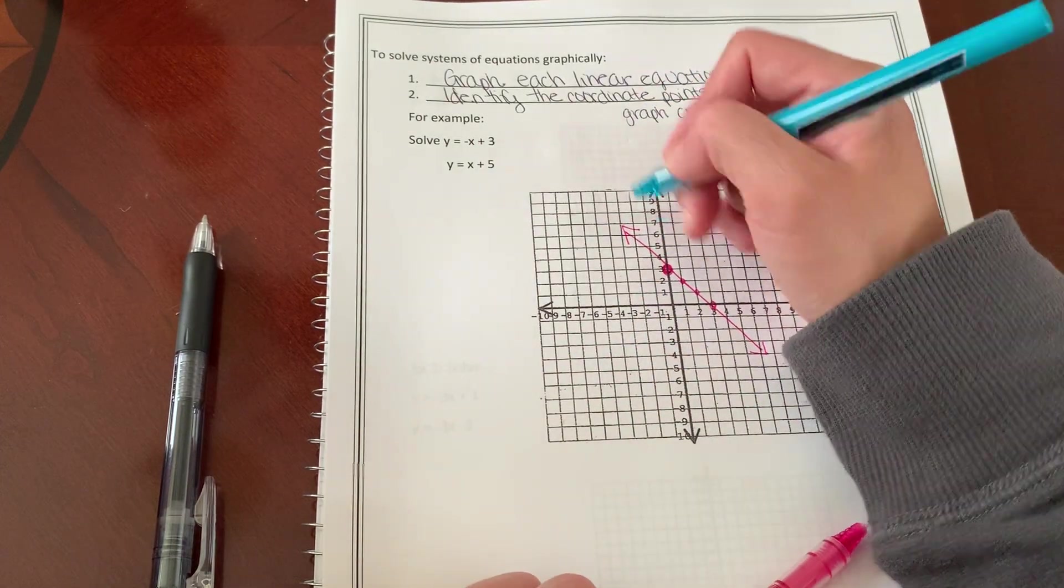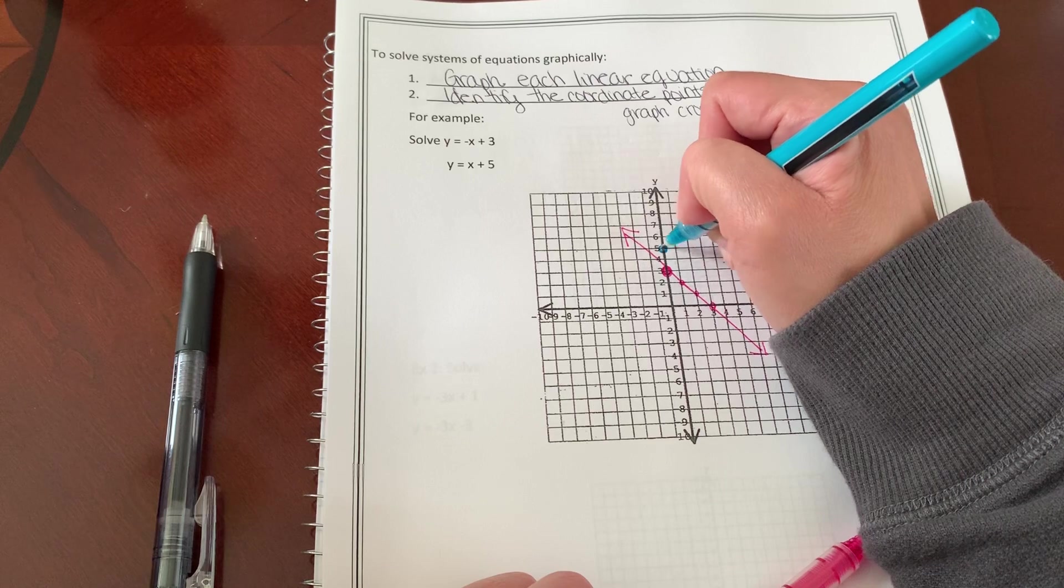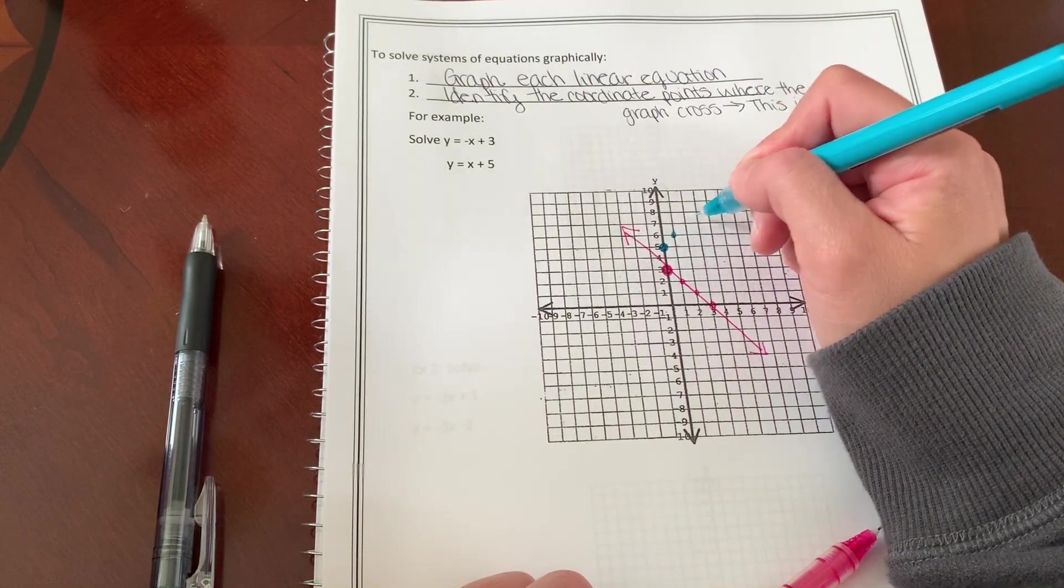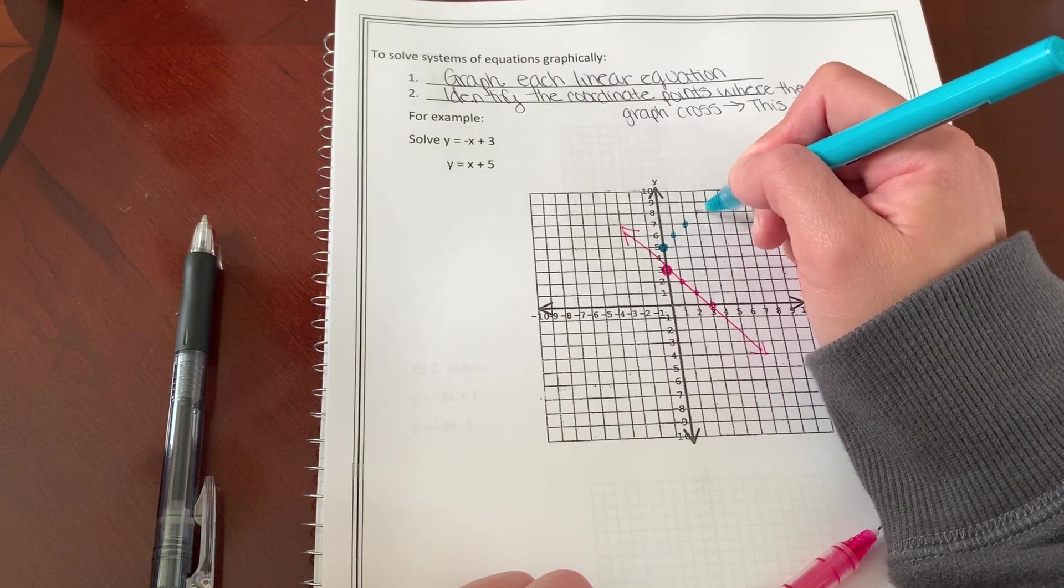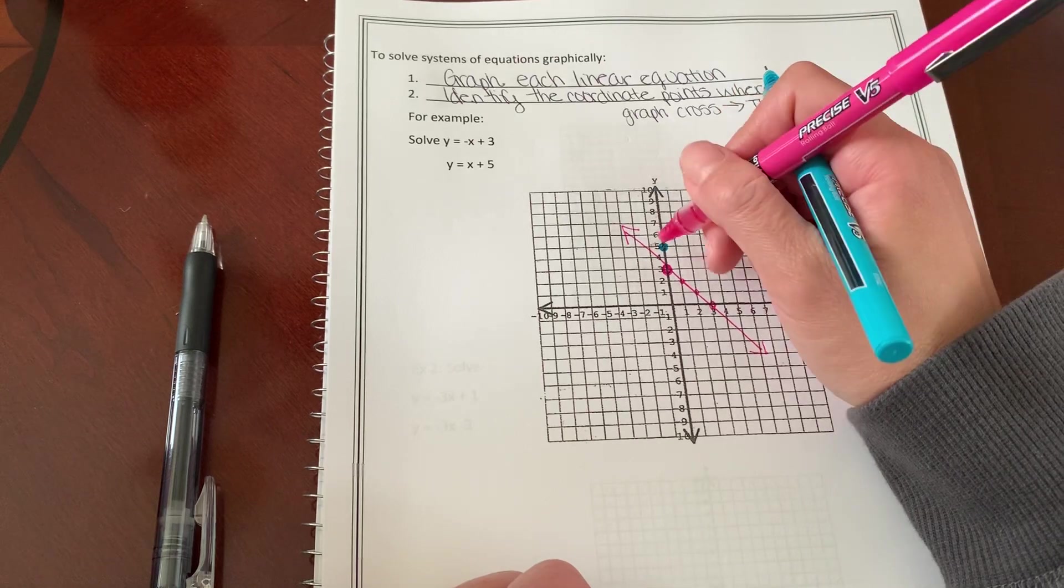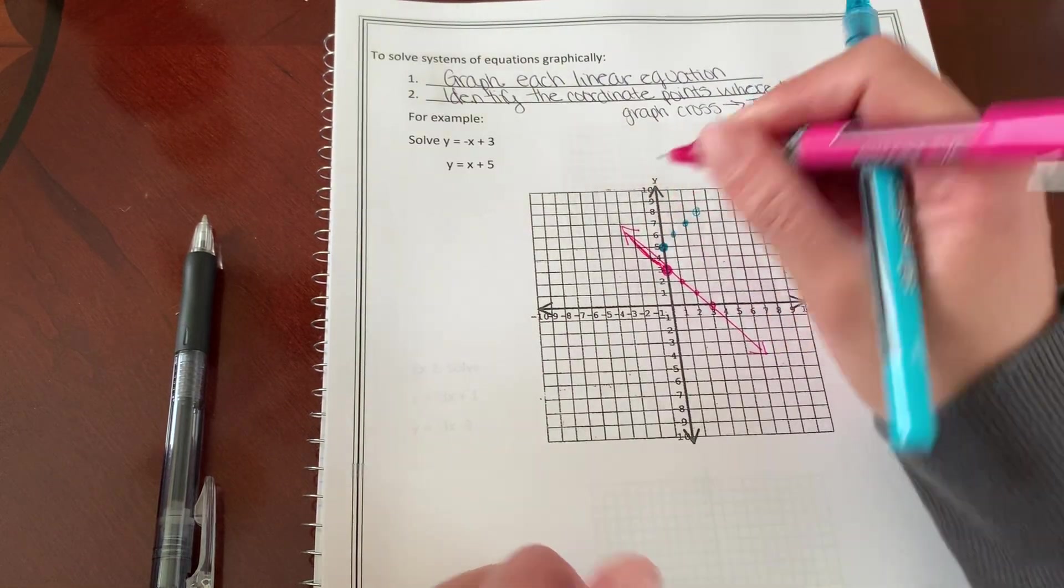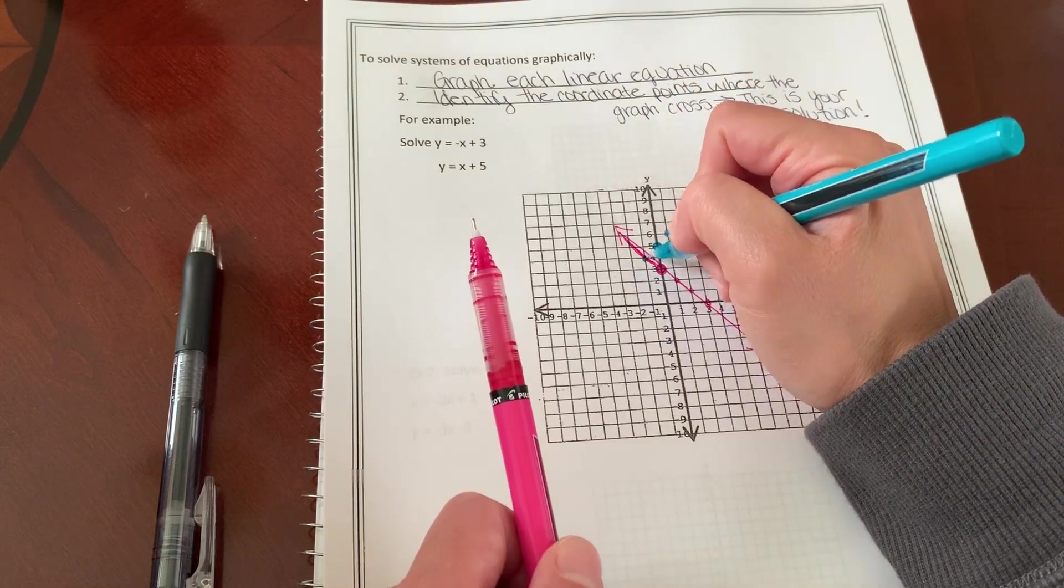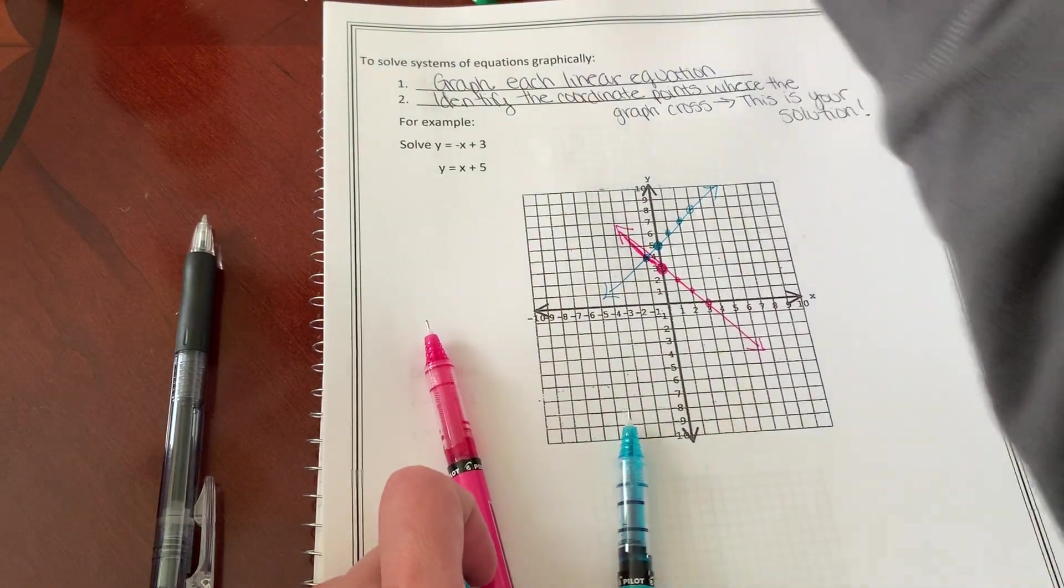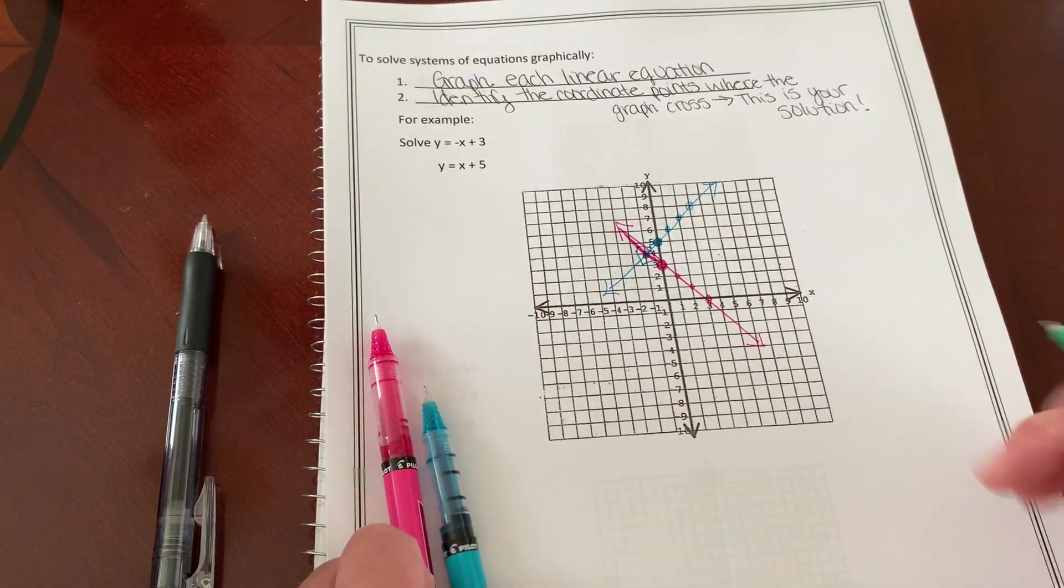My second line is going to begin at positive five. And I'm going to move up one, right one, up one, right one. Since I'm going the wrong direction, I'm going to go backwards, down one. My graph is a little bit off here, my pink line. So it's going to cross right here. I'm just going to draw a little square. Great, so my solution.